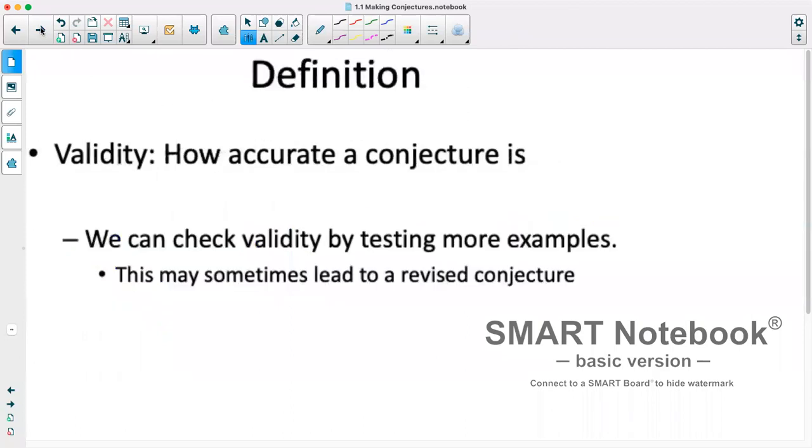Okay, so we'll just look at one more definition, which is validity. So how accurate a conjecture is. Typically, the more examples that we do that work out, the more accurate we know it is. That being said, if a single example doesn't work, it is no longer valid.